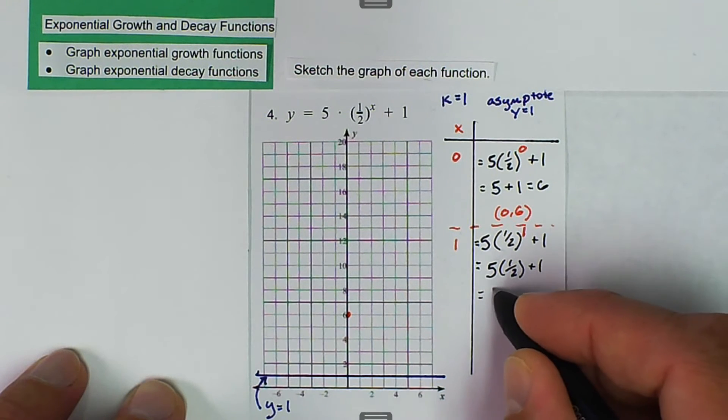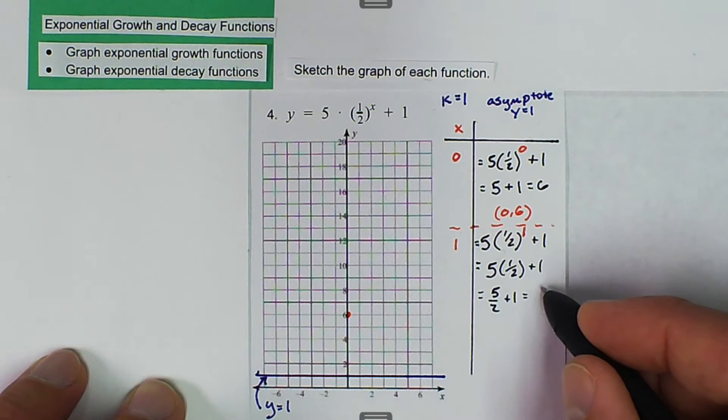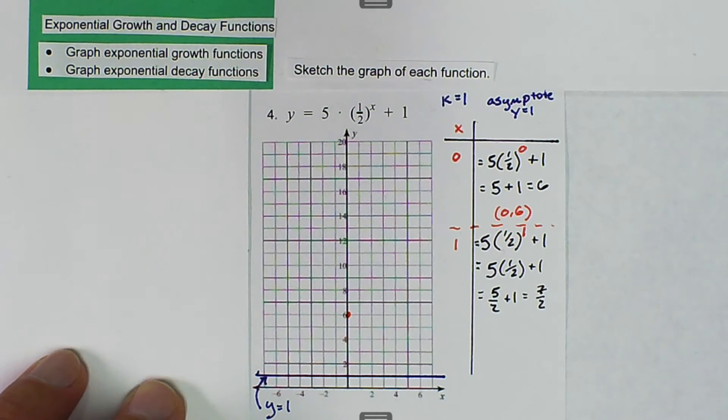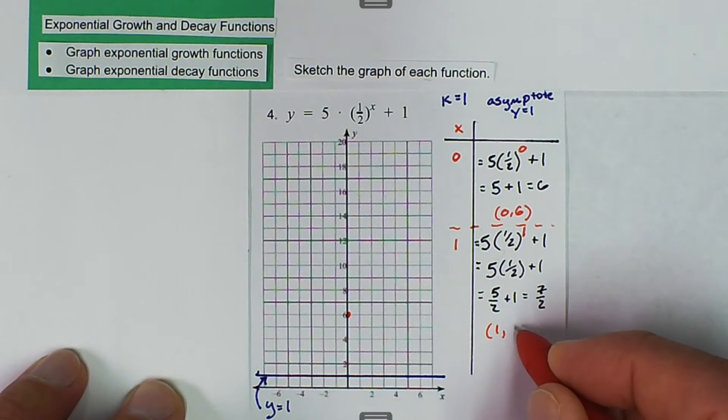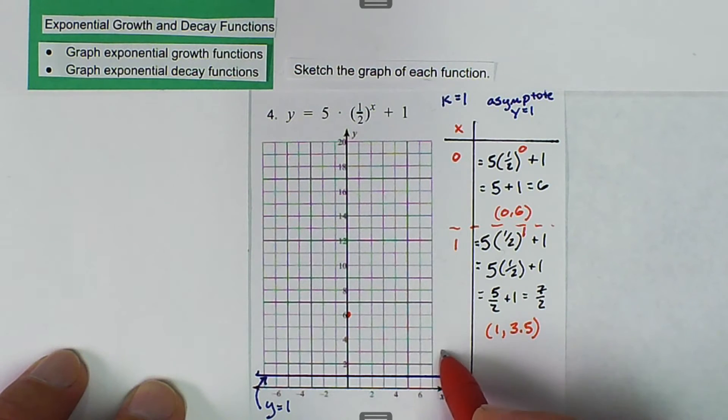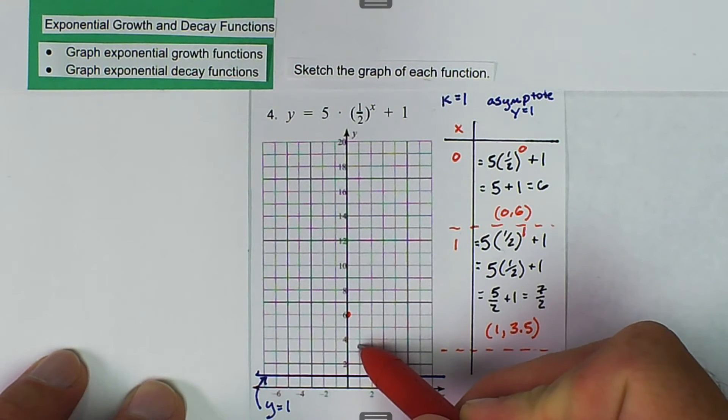So then we get 5 over 2 plus 1, and that is going to be equal to 7 over 2. So we get the ordered pair 1 comma 7 divided by 2 is 3.5. So 1 and 3.5 is right there.